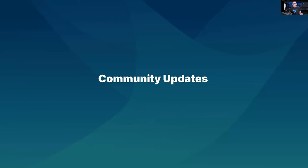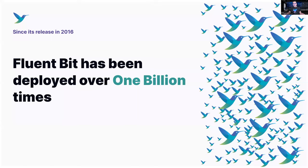Now, about FluentBit updates — we have a lot of news to share. I'm pretty excited about this release, and the whole team, community, and companies working together on this release have done tremendous work. The biggest news is that we just crossed one billion deployments from our Docker Hub registry. This is a huge accomplishment. I would say just a few projects hit this scale. Nowadays, FluentBit is deployed one to two million times per day, which is insane. That means more traction, more bugs, more feature requests, but a bigger community, and that's what we aim for.